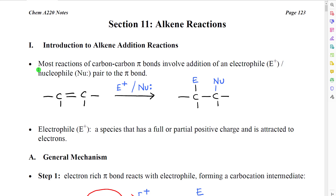Most reactions of carbon-carbon pi bonds — in other words, alkenes — involve addition of two things: an electrophile paired with a nucleophile.